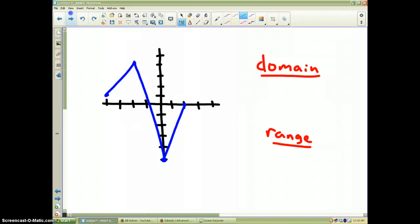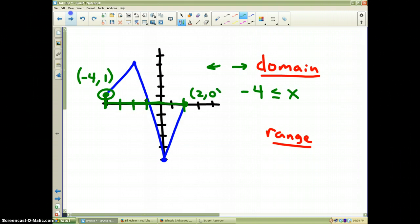Okay, domain. Remember, domain goes this way and this way, left and right. How far does the graph go to the left and how far does it go to the right? Well, the graph goes all the way over here to negative 1, negative 2, negative 3, negative 4. Therefore, the graph has a point right here that has an x-coordinate of negative 4. So, therefore, negative 4 is the lowest number in the domain. And remember, that's less than or equal to x. And now, how far to the right does the graph go? Well, the graph ends right here, which is the coordinate (2,0). So, therefore, x is less than or equal to 2. So, hopefully, you have that as the domain.